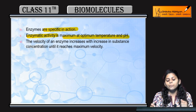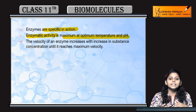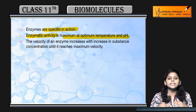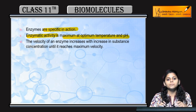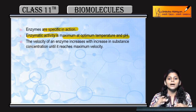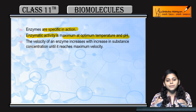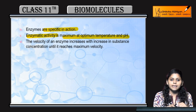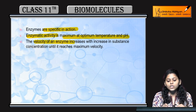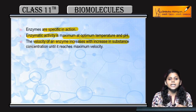Enzyme activity is maximum at optimum temperature and pH. Har enzyme ka ek optimum value hoti hai — maximum value hoti hai. Iske zyada hone se ya kam hone se reaction rate lower ho jati hai. For example, agar optimum temperature aur optimum pH pe koi reaction carry ho raha hai to reaction rate maximum hogi. Agar temperature ko kam ya zyada karo to reaction rate bhi kam ho jayegi. Sirf optimum temperature aur pH pe sabse zyada maximum enzymatic activity hogi.